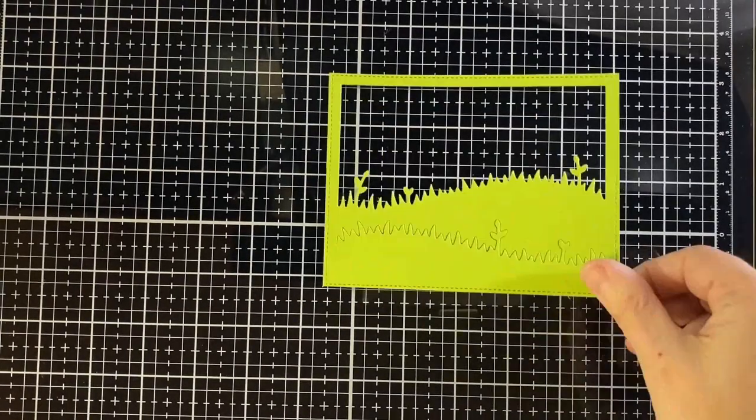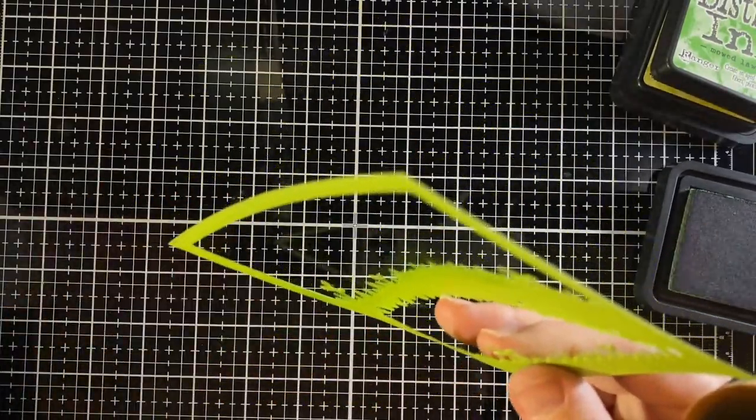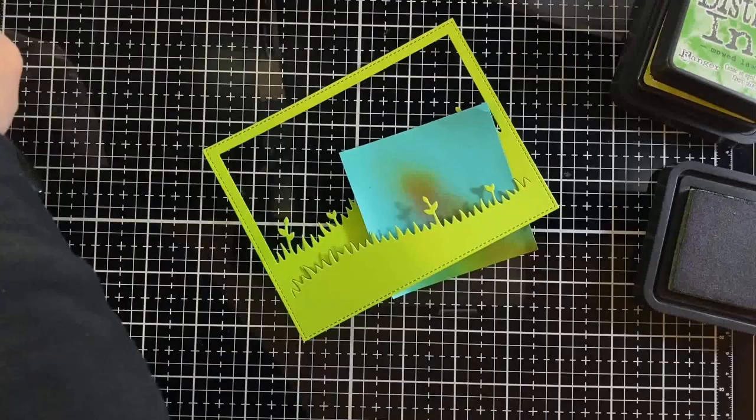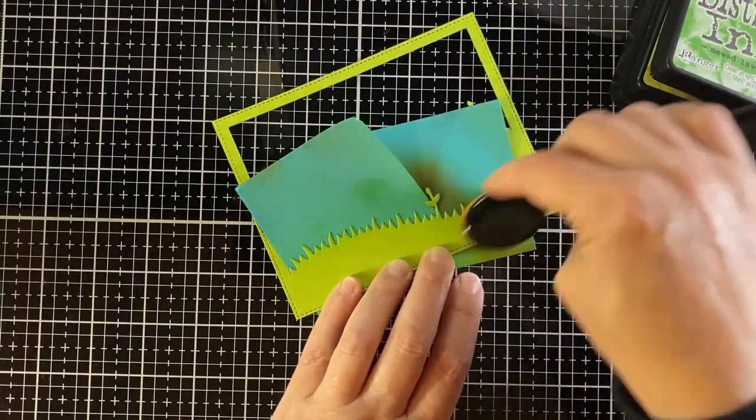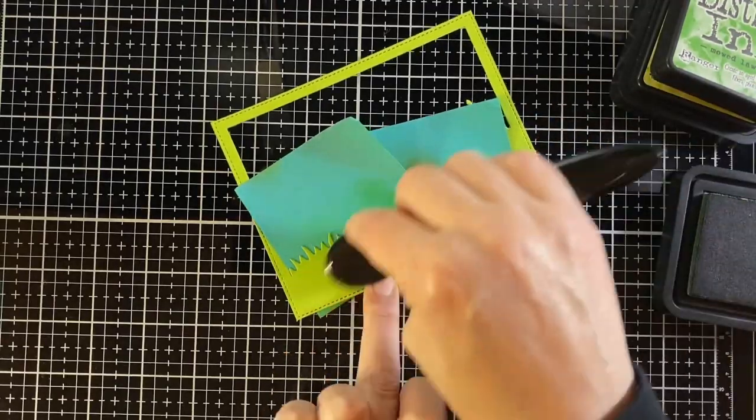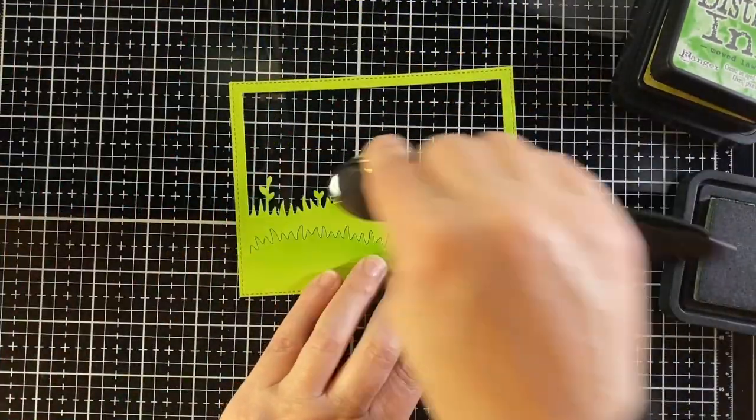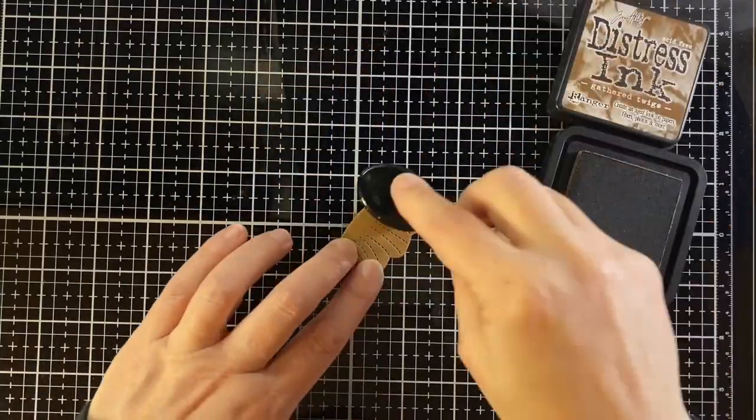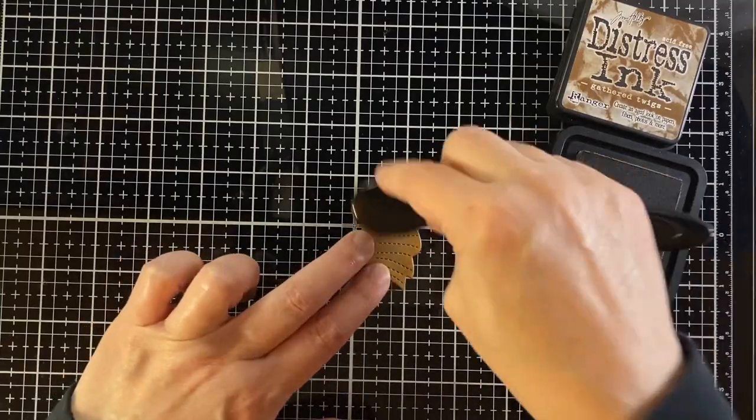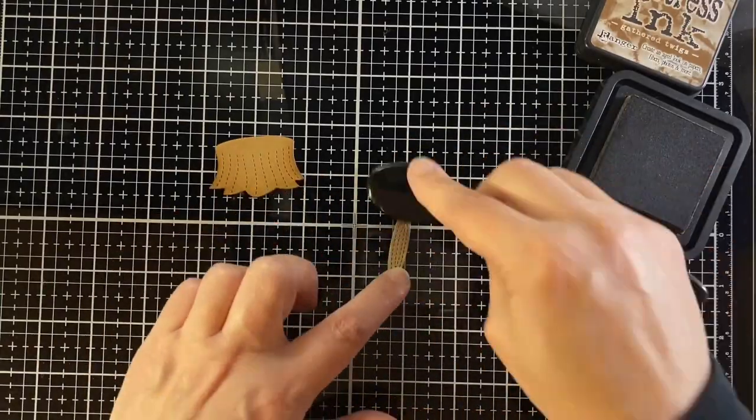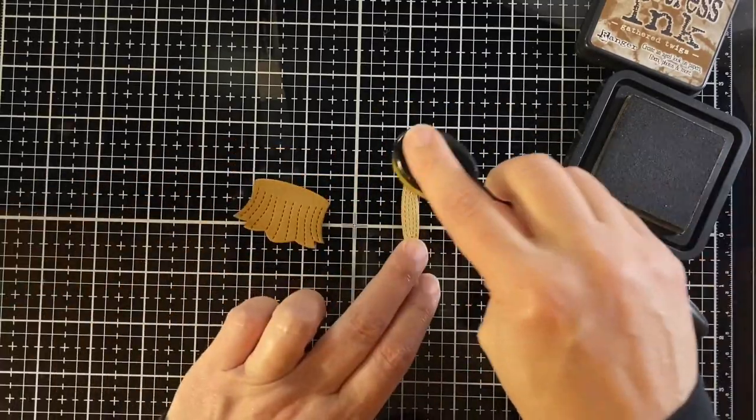I wiped away the ink from the words so that they show up well and I am ink blending the grass just to give it a little contrast. Here is just some paper in between so that I can get the top edges of the hills without getting it on the bottom of the hill behind it. Putting some gathered twigs distress ink on the sides of the stump and then on the top so the stump looks rounded.